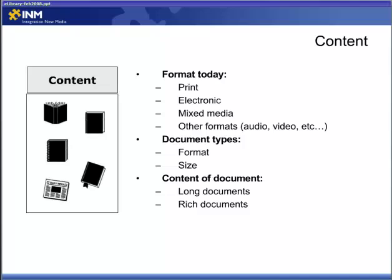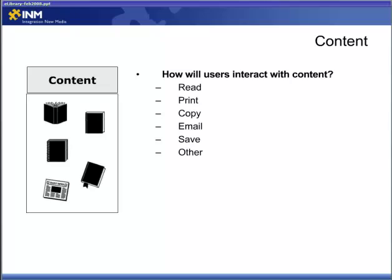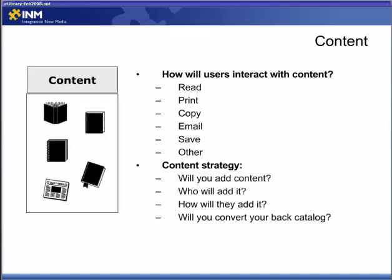Do you have long documents that are very text-heavy, or is your document collection more shorter magazine-style publications that have a lot of formatting and imagery in them? If that's the case, the way you present those documents may be very different. It's also important to look at how users are going to interact with your content — are they coming to flip through a magazine, are they coming to read materials in detail, will they be able to print, copy, email, or save a local copy?